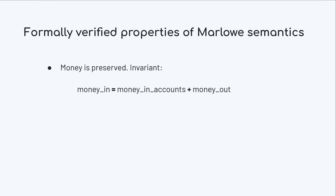The first property is that money is preserved. In the accounting of Marlowe, the money that comes in through a transaction always equals the money that remains in the contract in its accounts plus the money that goes out of the contract. This guarantees that the accounting system Marlowe uses is consistent — it doesn't lose any money or create any money.